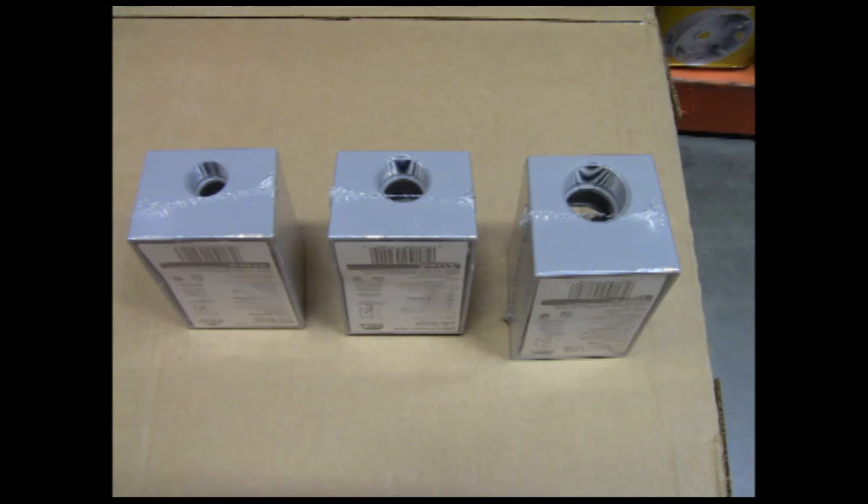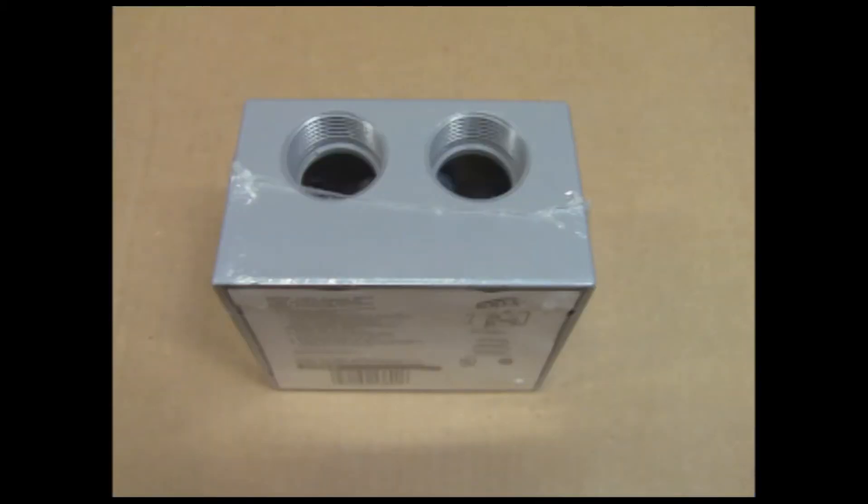Here you see a box that is commonly used as a J-box for wire as large as number 6. It is a 2-gang, 1-inch, receptive bell box.